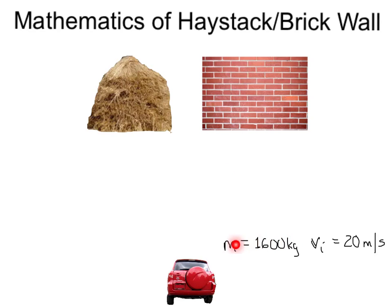The mass of my RAV4 is about 1,600 kilograms, and let's say I'm traveling about 20 meters per second, which is approximately 40 miles an hour. What would my initial momentum be? Taking momentum as mass times velocity, this gives an initial momentum of 32,000 kilogram meters per second.